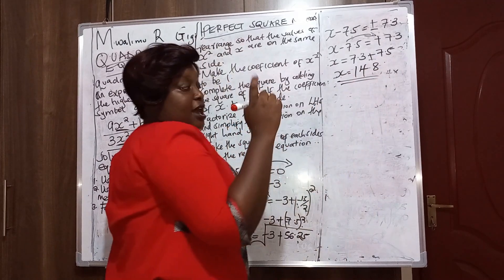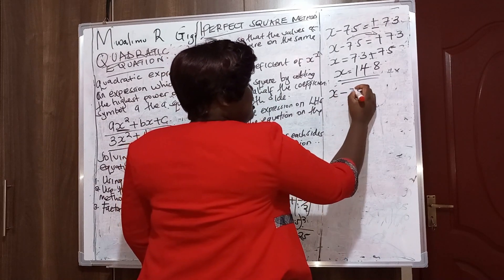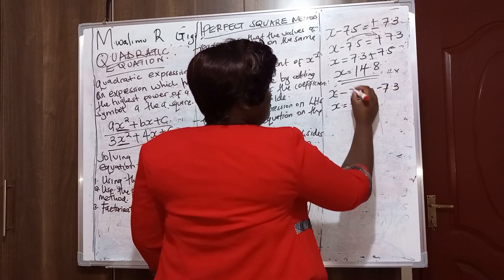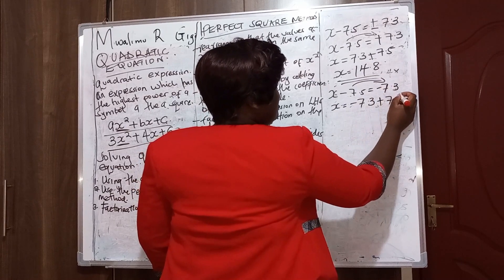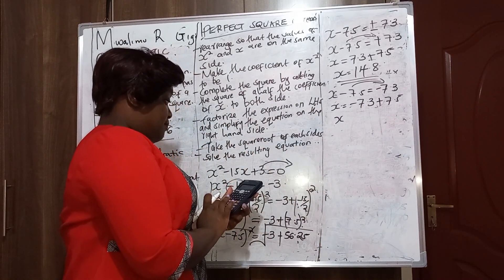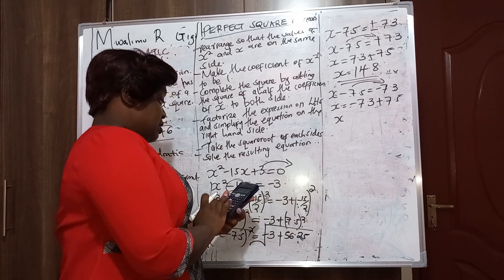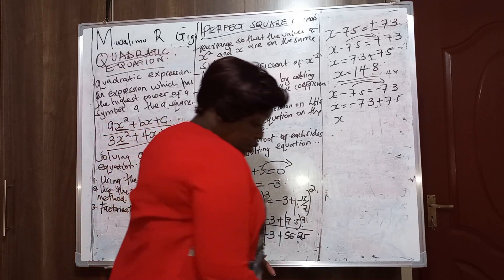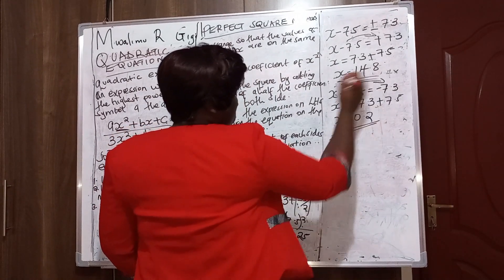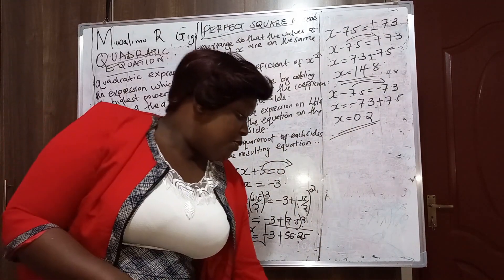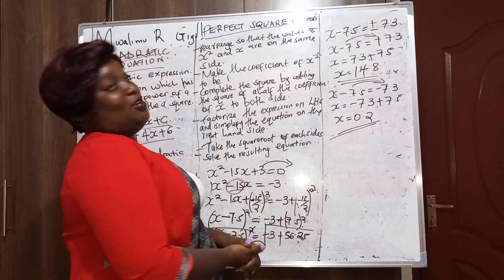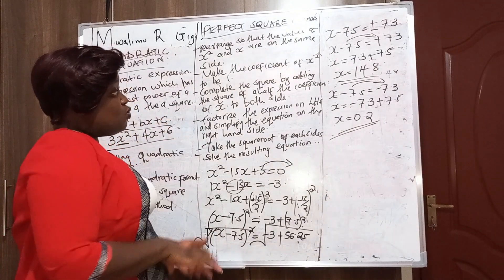The second equation: x − 7.5 = −7.3, so x = −7.3 + 7.5 = 0.2. So we have two values of x: 14.8 and 0.2. We have seen how to solve a quadratic equation using the perfect square method.